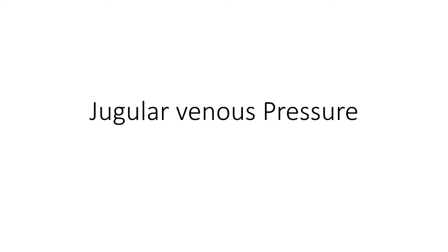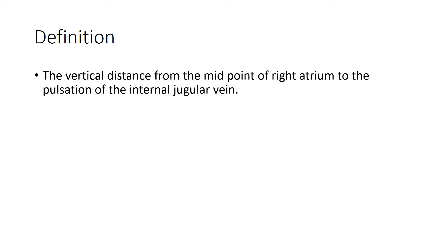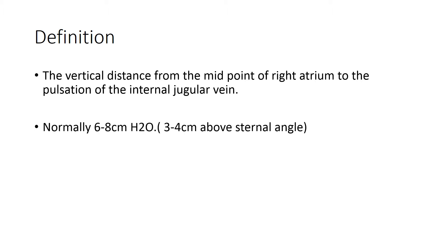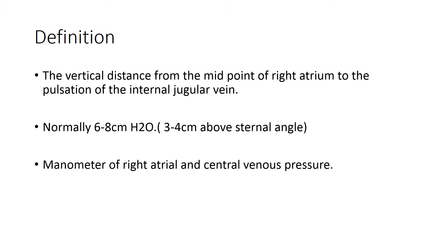Welcome to Badding Pediatrogen. We are talking about jugular venous pressure. By definition, this is the vertical distance from the midpoint of the right atrium to the position of the internal jugular vein. It's normally 6 to 8 cm of water, although if you are measuring from the angle of Louis, it's 3 to 4 cm. It's used to estimate the central venous pressure and the pressure in the right atrium.